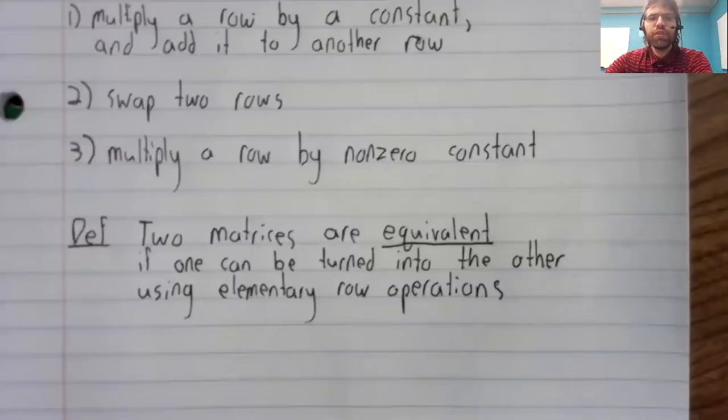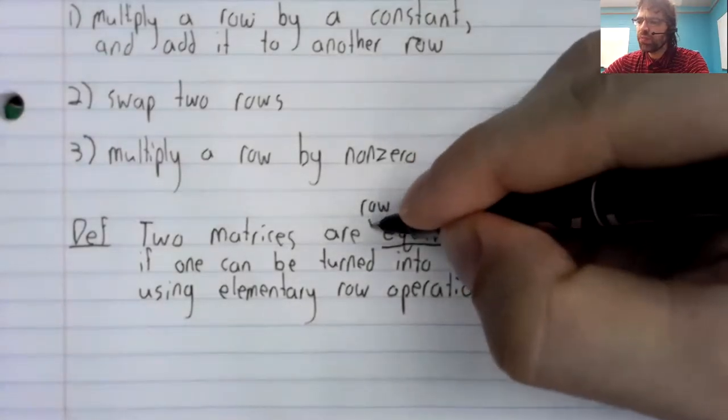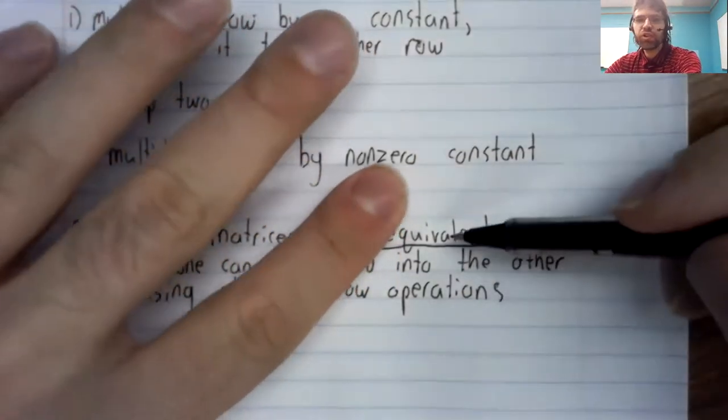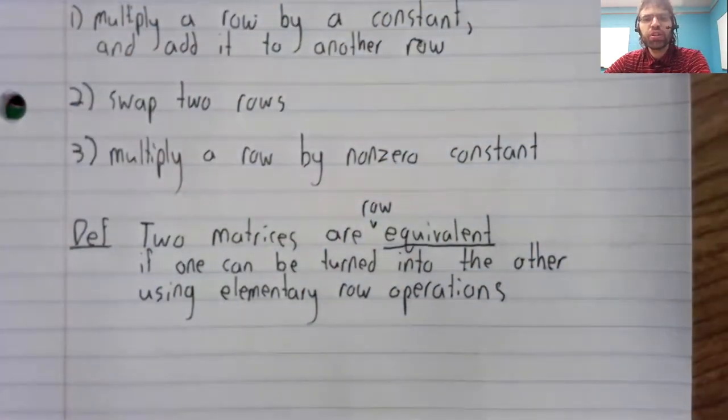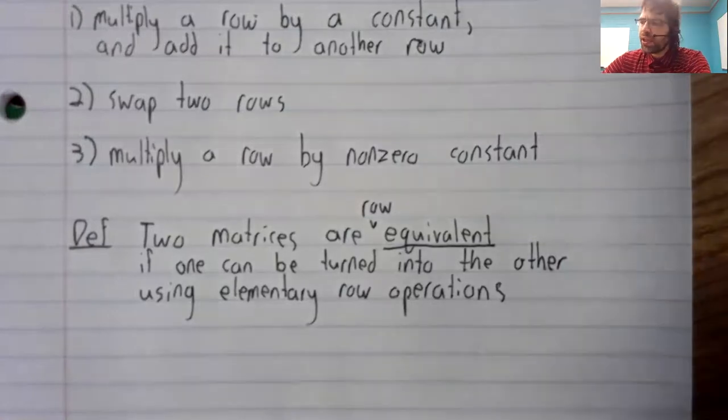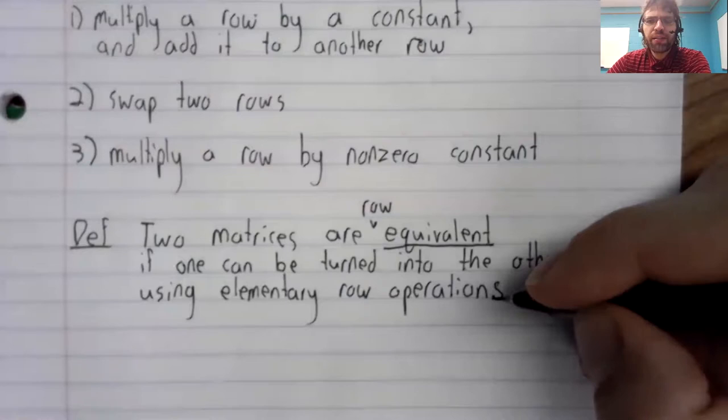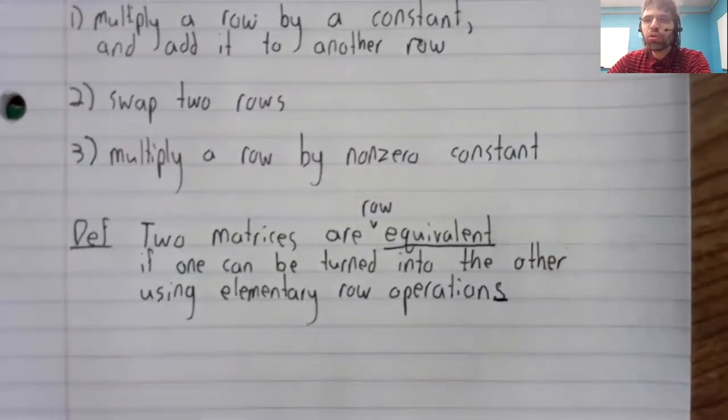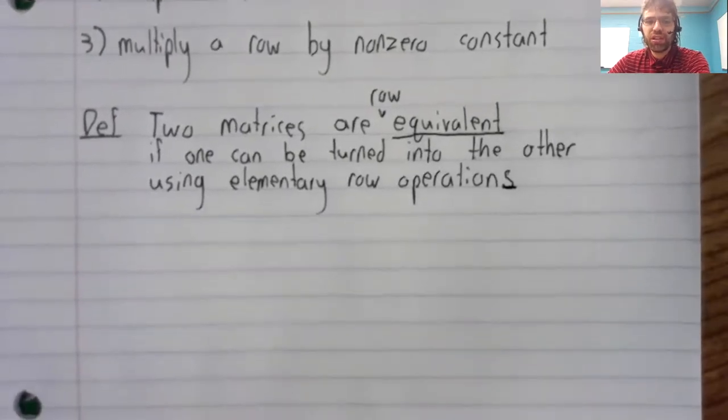Two matrices are equivalent - sometimes we say row equivalent, but often we just say equivalent - if one can be turned into the other using elementary row operations. Notice the plural here; we might be performing multiple elementary row operations.